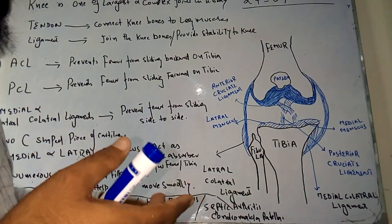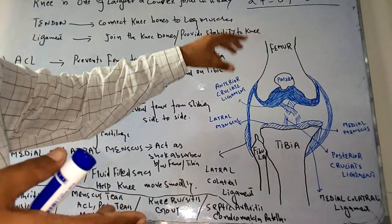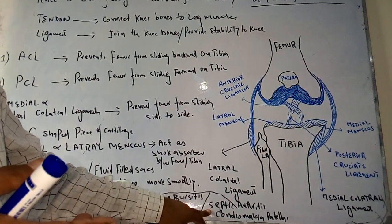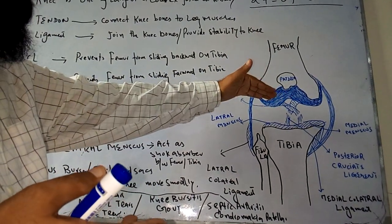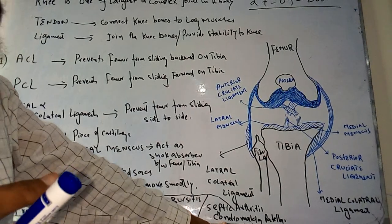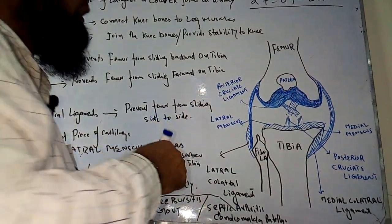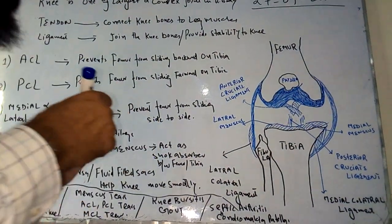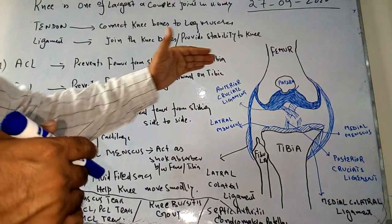Gout occurs when uric acid is high and uric acid crystals are found in the joints, causing pain in the knee. Another term is septic arthritis, where sepsis is found in the knee joint, which can also lead to major problems. Then there is chondromalacia patella, a problem in the area near the patella. All these problems lead to knee issues and disturb the smooth movement of the knee.